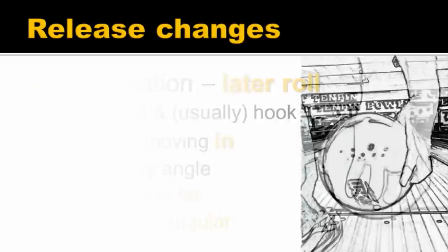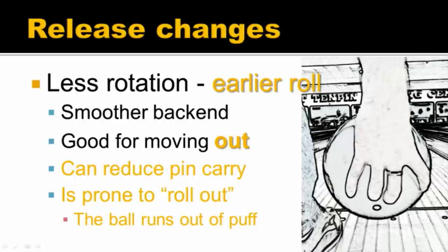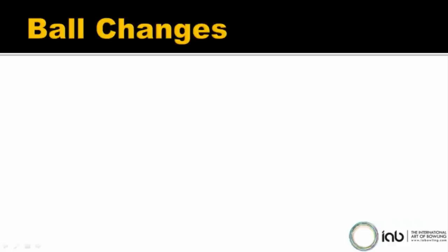If I want to move outwards, I need to create less rotation — I want the ball to face up sooner and create a smoother back end. An earlier roll release, when my hand is behind the ball, allows the ball to roll more end over end, gives me a smoother reaction off the back, and is excellent for playing the outside parts of the lane. The downside is that end-over-end roll can sometimes result in reduced pin carry, and it's more prone to roll out. Roll out is where your ball has accelerated and can accelerate no more — it's read the friction, there's no more core tilt left in the ball, and the ball simply runs out of puff. You'll know when your ball's rolled out: it runs out of hook and hits very badly indeed.